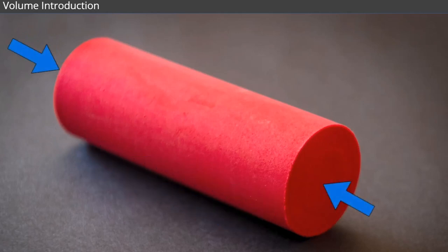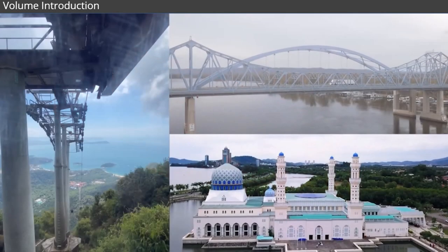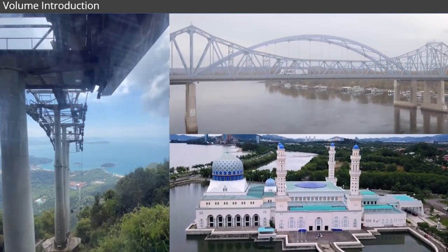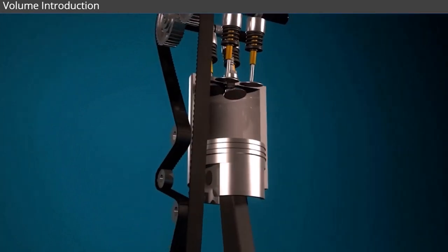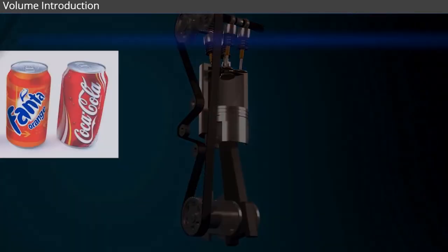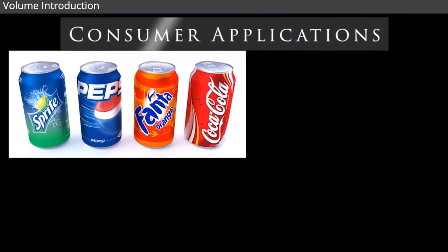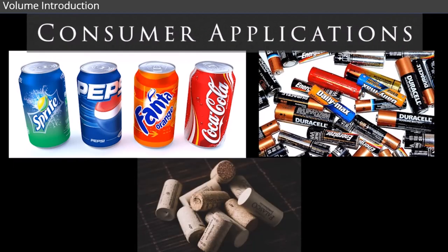The center of the circular bases overlaps each other to form a right cylinder, which is used in many engineering applications, including the production of steel shafts, bushings, and piston engines. Cylinders are also used for many consumer products, like soda cans, batteries, and wine corks.